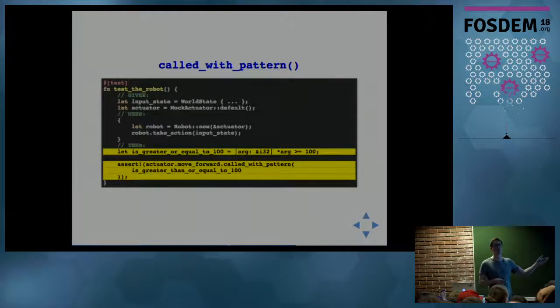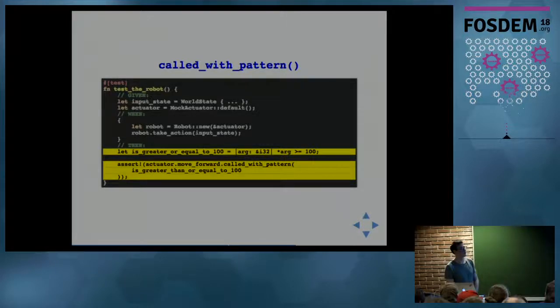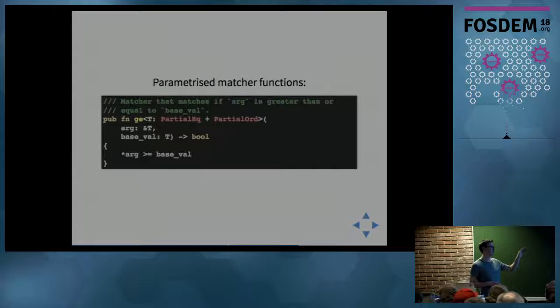Obviously, handwriting a bunch of closures all the time is not ideal. It's very verbose and quite painful. So you get around this with parameterized matcher functions. For example, you would have a greater_than_or_equal_to function. This is a generic function that can take any type that implements partial_eq and partial_ord. It takes a single parameter - the first argument is the value being matched, and it takes a single parameter base_value, which is the base value to compare against.